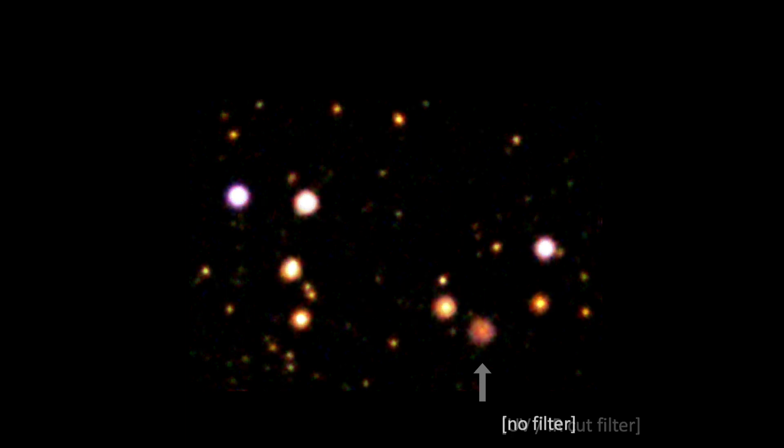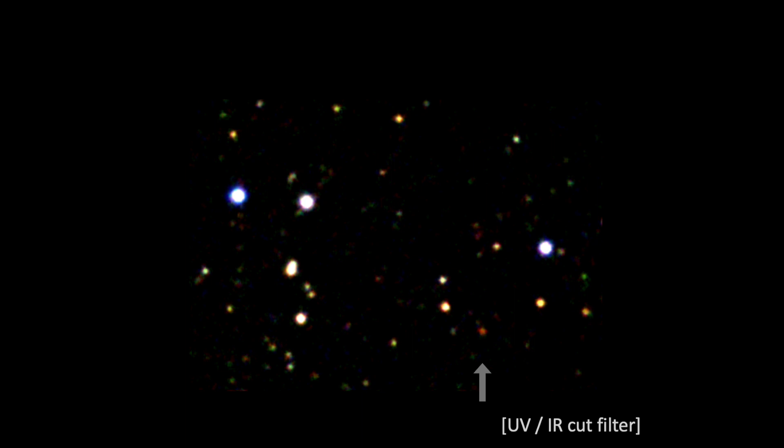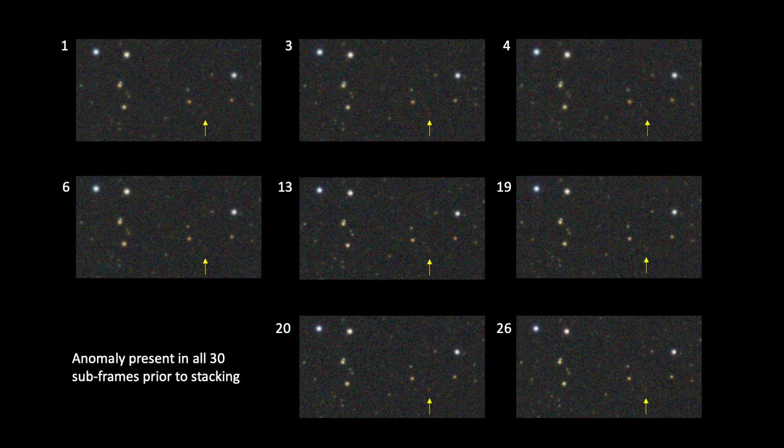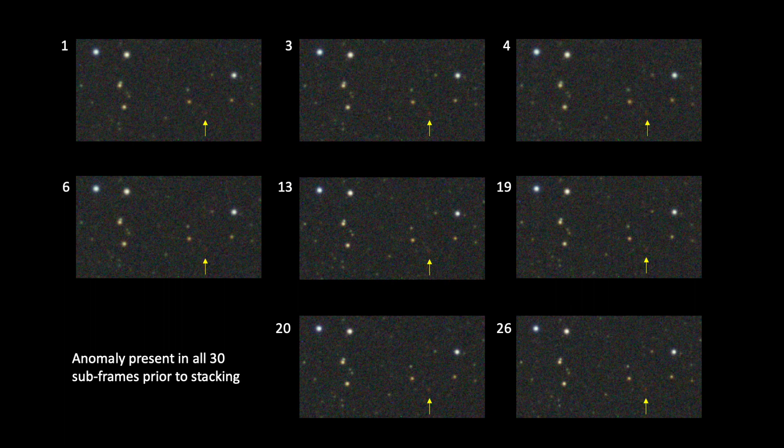My first thought was that it could actually be some strange optical artifact, and hence I wanted to rule that out. So I looked at all the no-filter subframes to see if it was in all the subframes or in only one frame. And as you can see here, it is diffuse, but present in all subframes. So it must be a feature of the actual star.